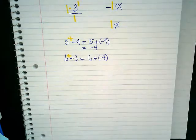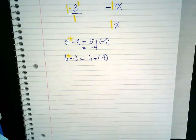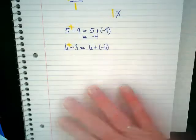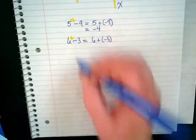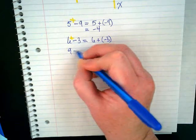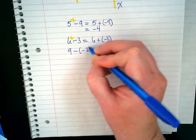The signs just tell us which direction on the number line to move. Here is the kind of problem I really wanted to talk about today. What if I have nine minus parentheses negative two?